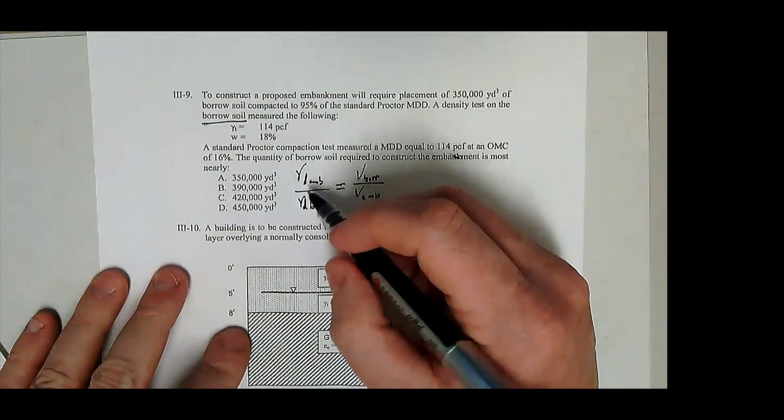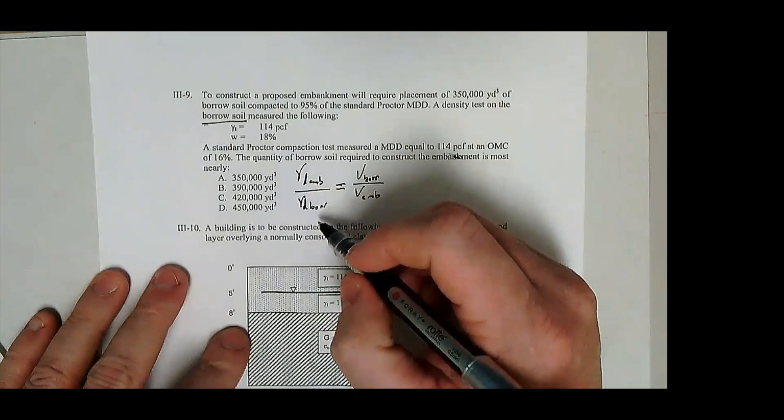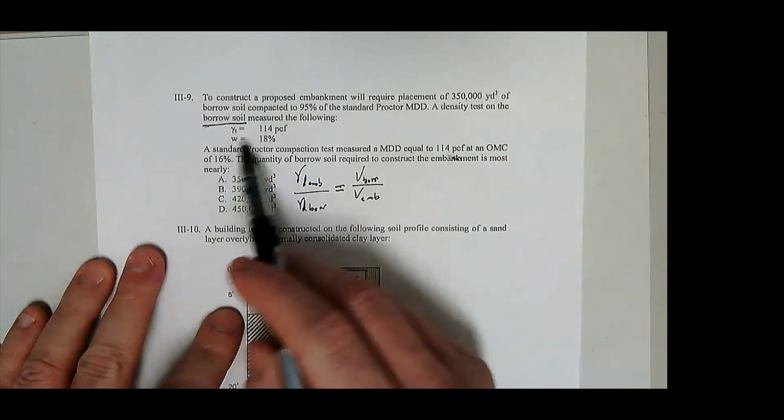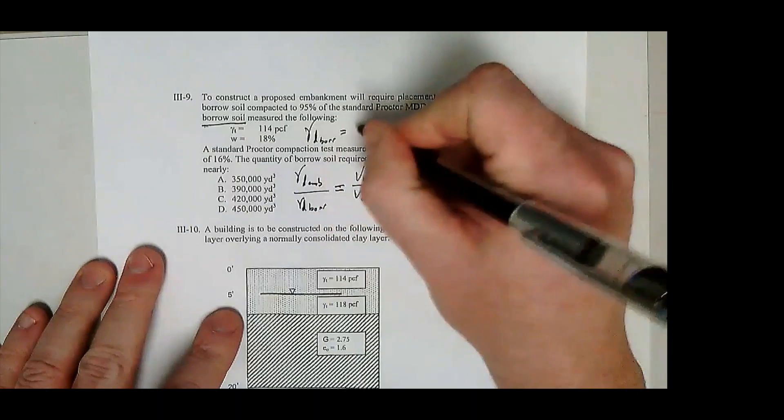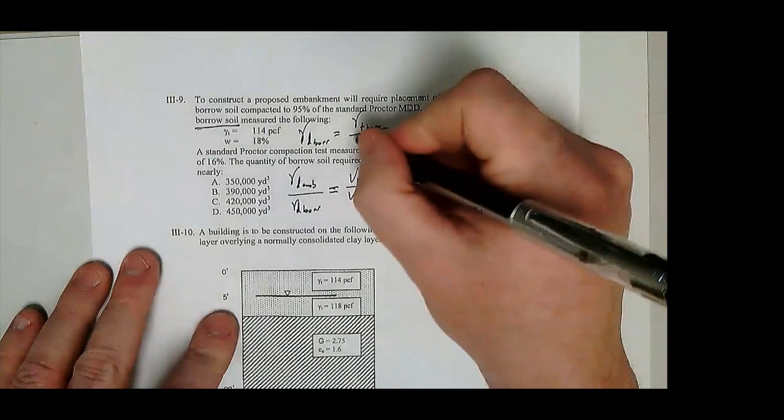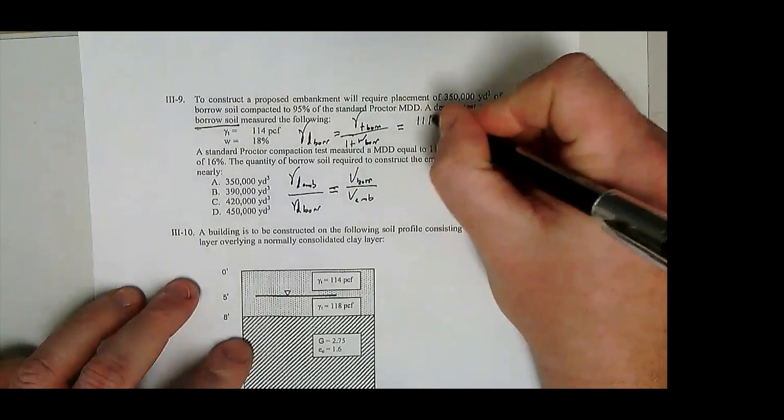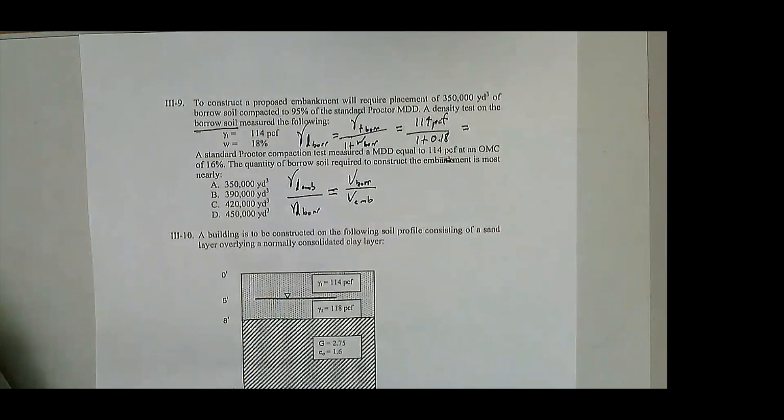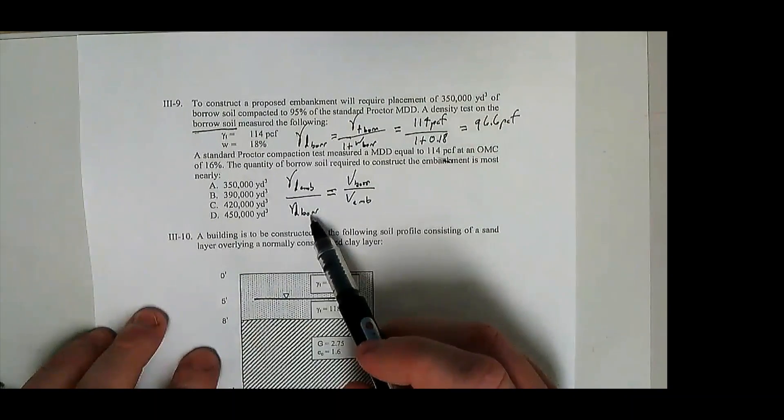Gamma d embankment is the dry density in place in the embankment after we've compacted it. Gamma d borrow is the dry density in the borrow pit when we dig it up. So we did some density testing on the borrow soil in terms of total unit weight and water content is what we measured. That means we need to calculate gamma d borrow from gamma t borrow and the water content borrow if we want to be explicit there. So you have one plus the water content. That equation is given on page 3-18. So this is 114 PCF divided by one plus 0.18. 96.6. Okay, so now we got this number.